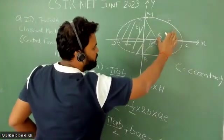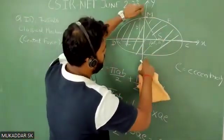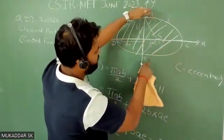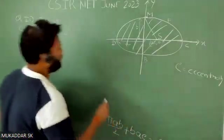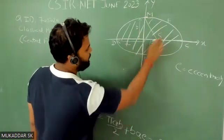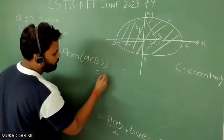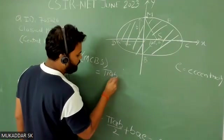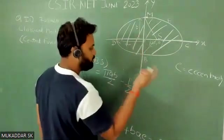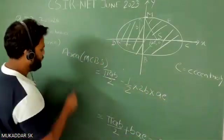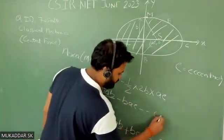Now we need to find the area of the second portion. The area of region MCBNS equals the area of half the ellipse minus the area of the triangle. The base is 2b and the height is ae. So the area equals πab/2 − bae. This is equation 2.